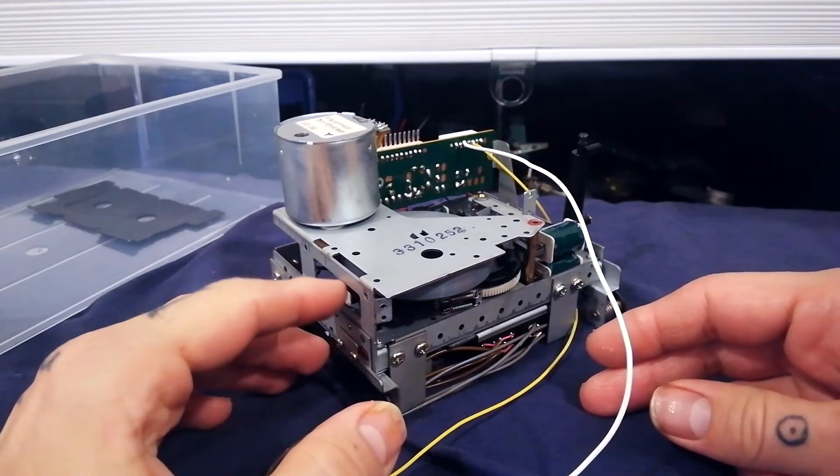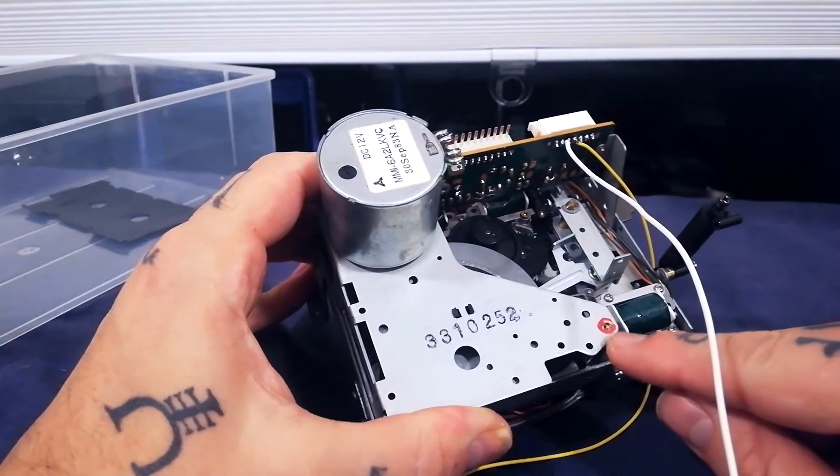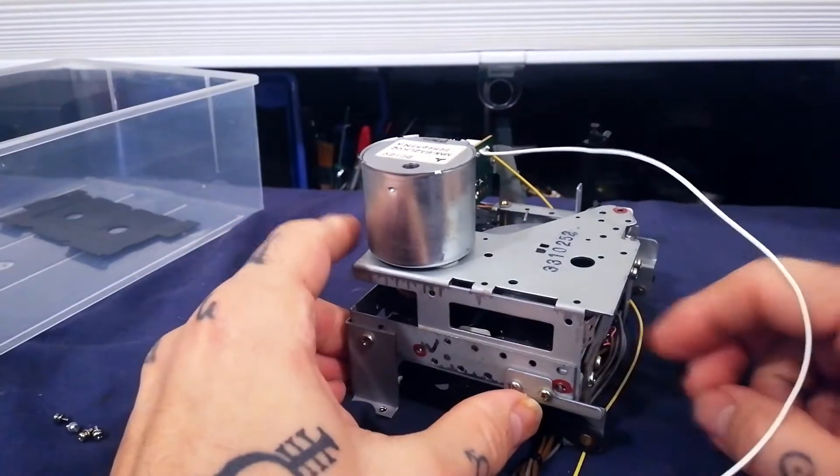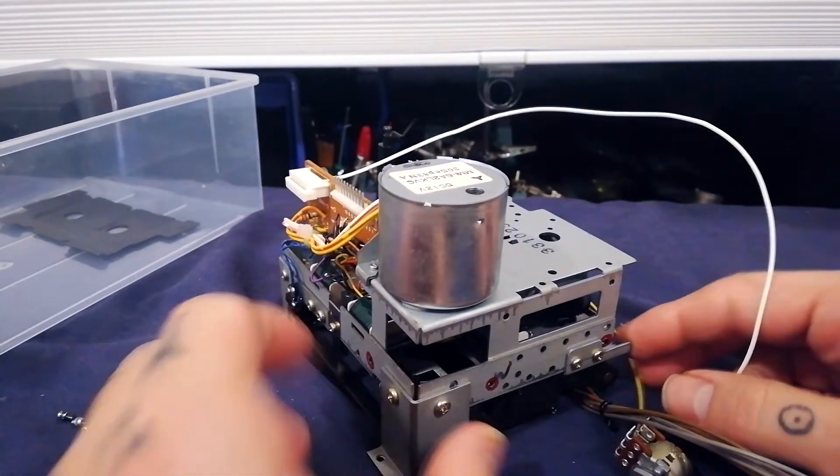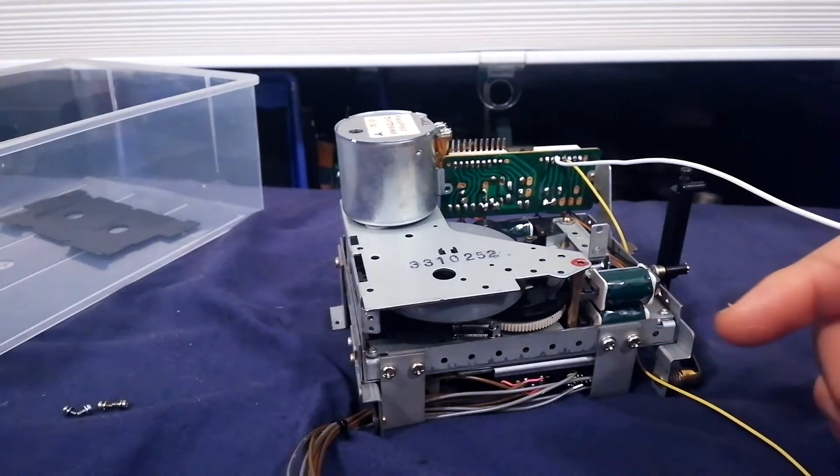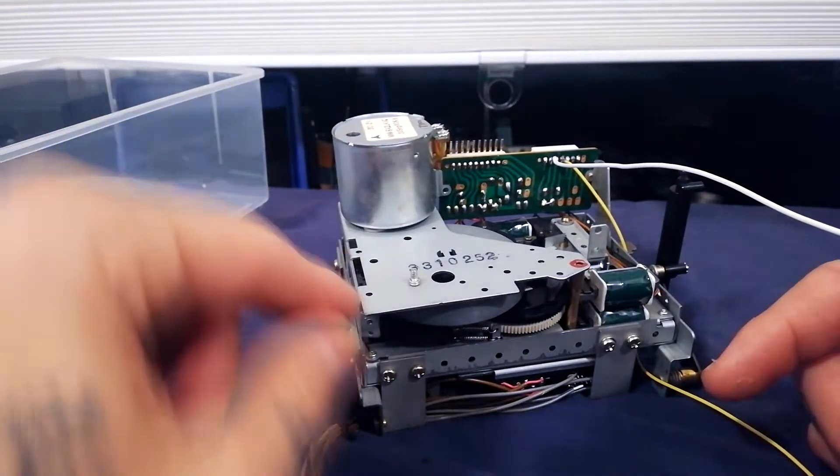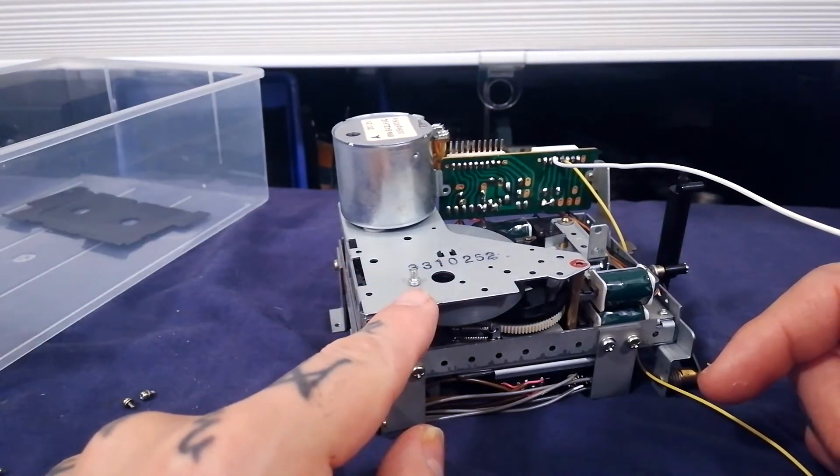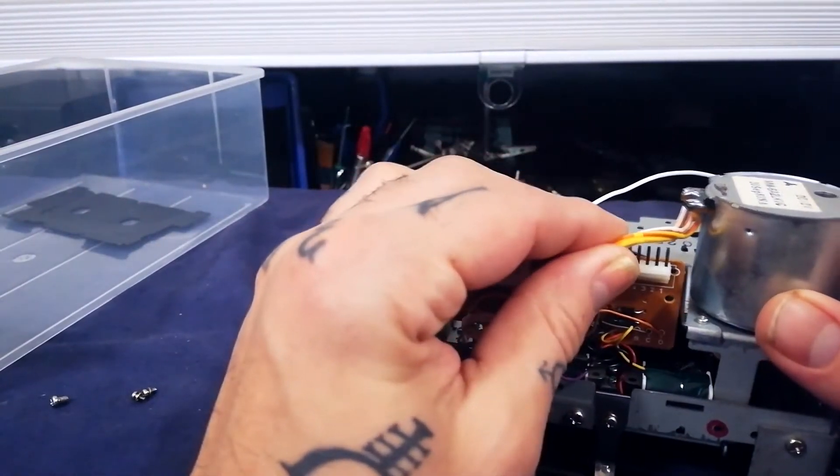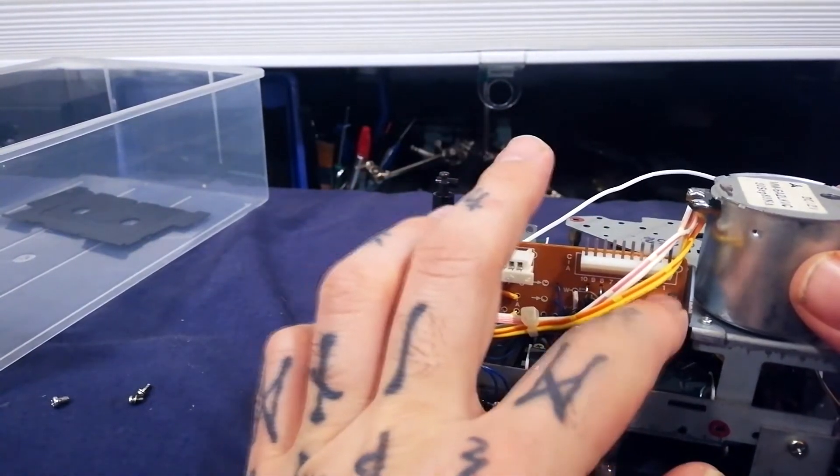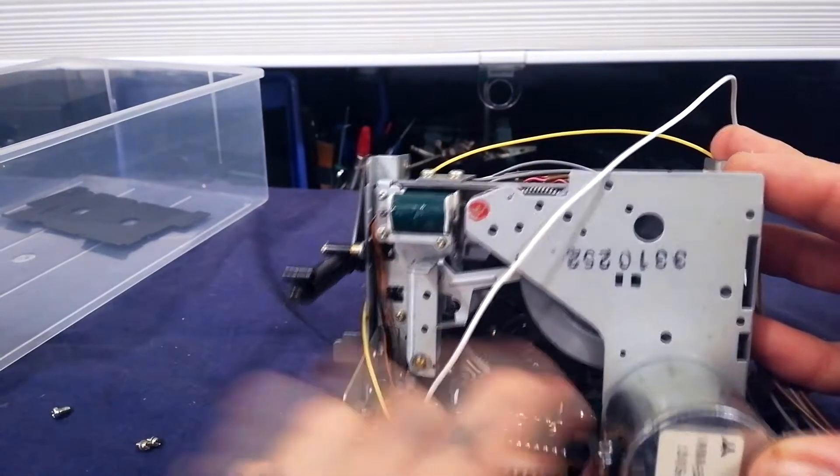I've gone ahead and removed all the screws necessary to take this plate with the motor on it off of the transport. Most of these locations I've put red sharpie on so you can see there's four locations where I've removed tiny little screws with a washer on them. And then there's this very slightly larger screw with no washer.